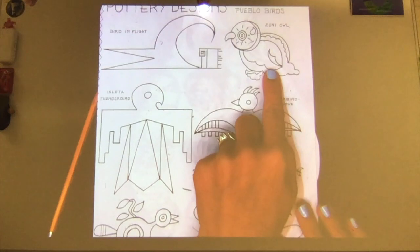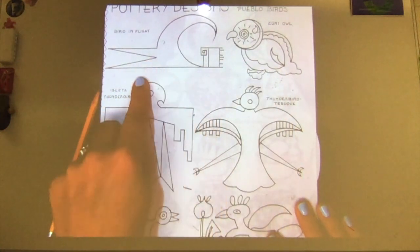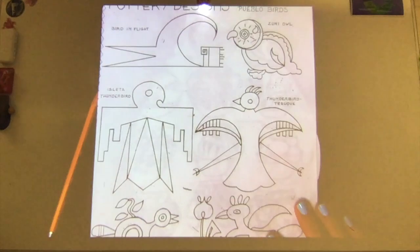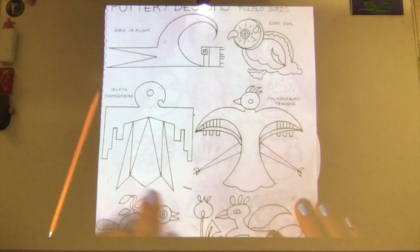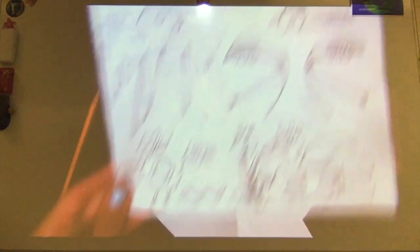So here we have an owl. We've got, this is supposed to represent a bird in flight. We have a thunderbird here. I like this little bird down here.